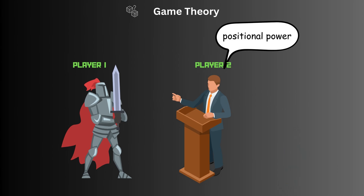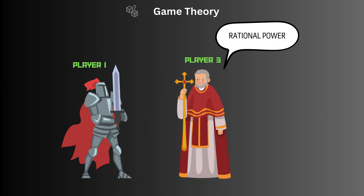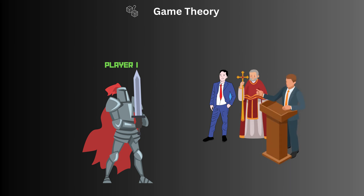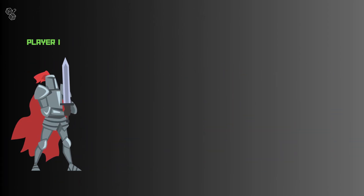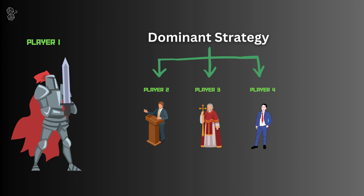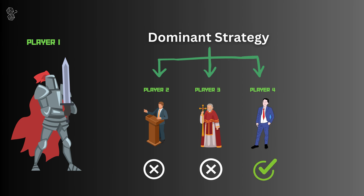The president's strategy is to leverage positional power to offer long-term gains. The pope's strategy: use relational power to appeal to the sellsword's conscience and promise spiritual rewards. The tycoon's strategy is to offer economic power with immediate, tangible benefits. Now, the sellsword stands at the crossroads — he must weigh these offers against his understanding of power dynamics and future implications. This is where game theory really comes into play. A dominant strategy for the sellsword might be to take the offer that gives him the highest immediate payoff, assuming he's purely self-interested.